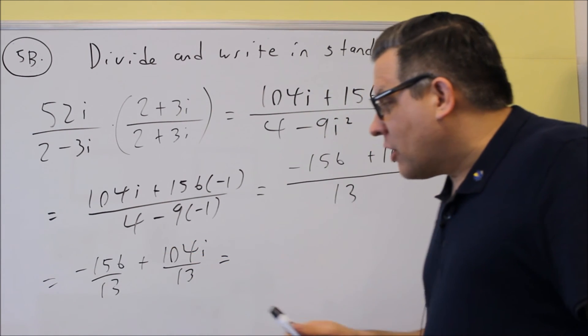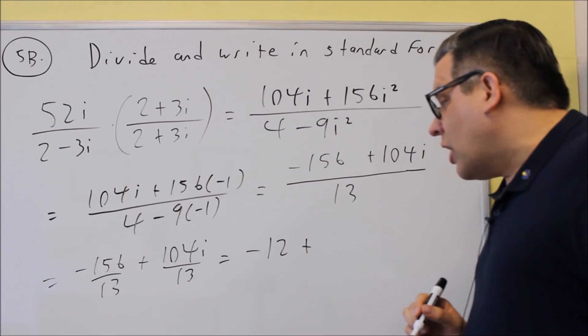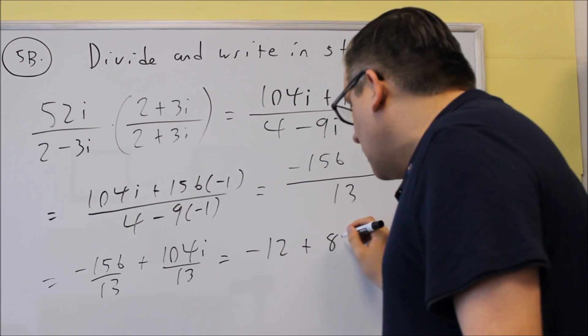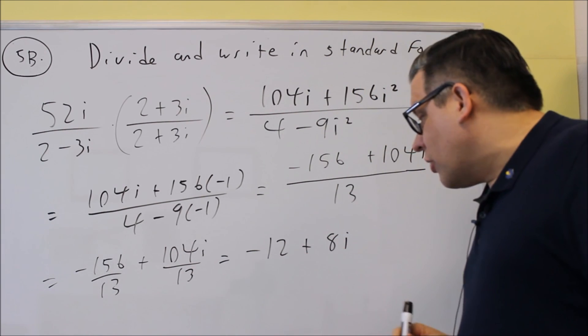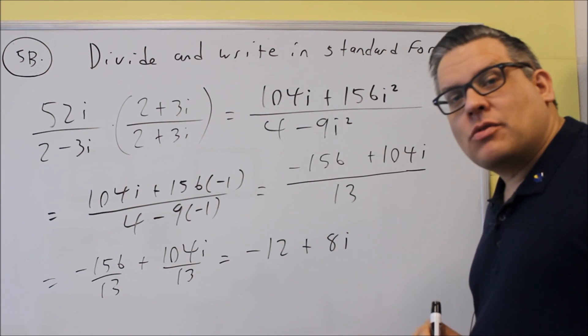So if I take negative 156 divided by 13, that's negative 12. And then I have 104i divided by 13, and that's going to be 8. So I get negative 12 plus 8i, and that would be your final answer in proper standard form.